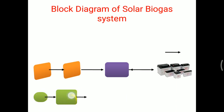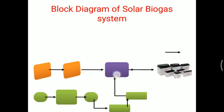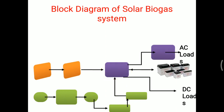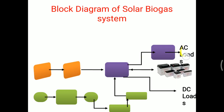The biogas can be used to run an IC engine. Through the IC engine, we can generate electrical energy. Through a voltage regulator, DC supply goes to the DC control unit. When DC is required, it is supplied directly from the DC control unit to the battery bank or DC load. When AC output is required, an inverter converts DC to AC for the AC load. Through the inverter, the AC supply can also be transferred to the AC grid.